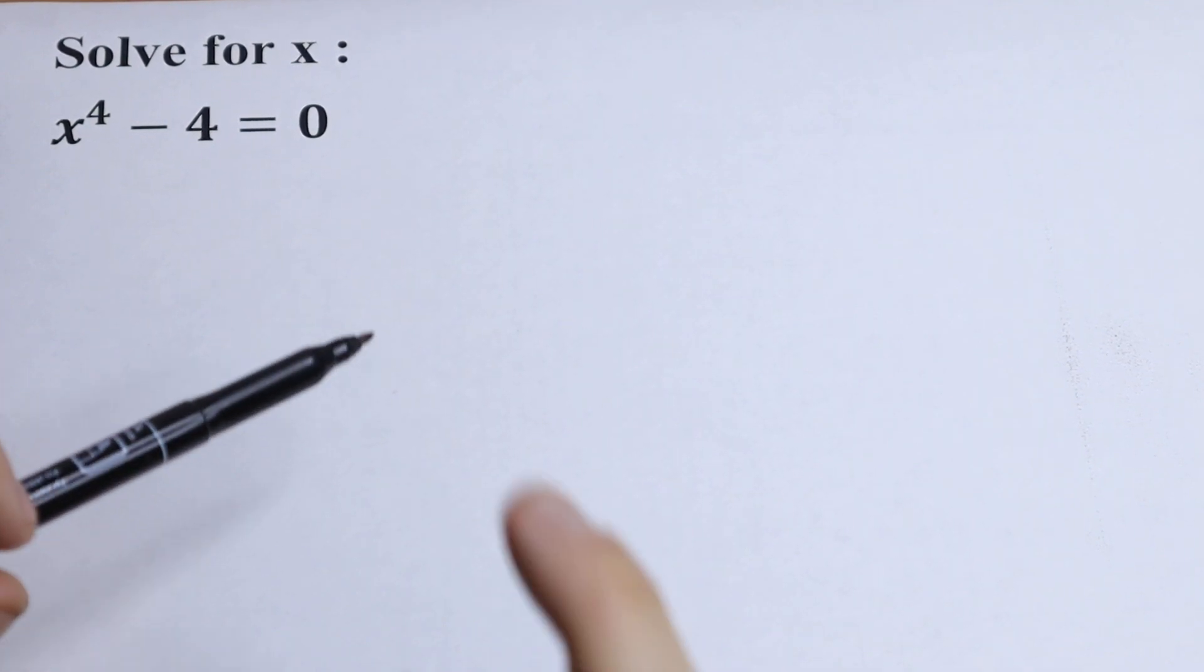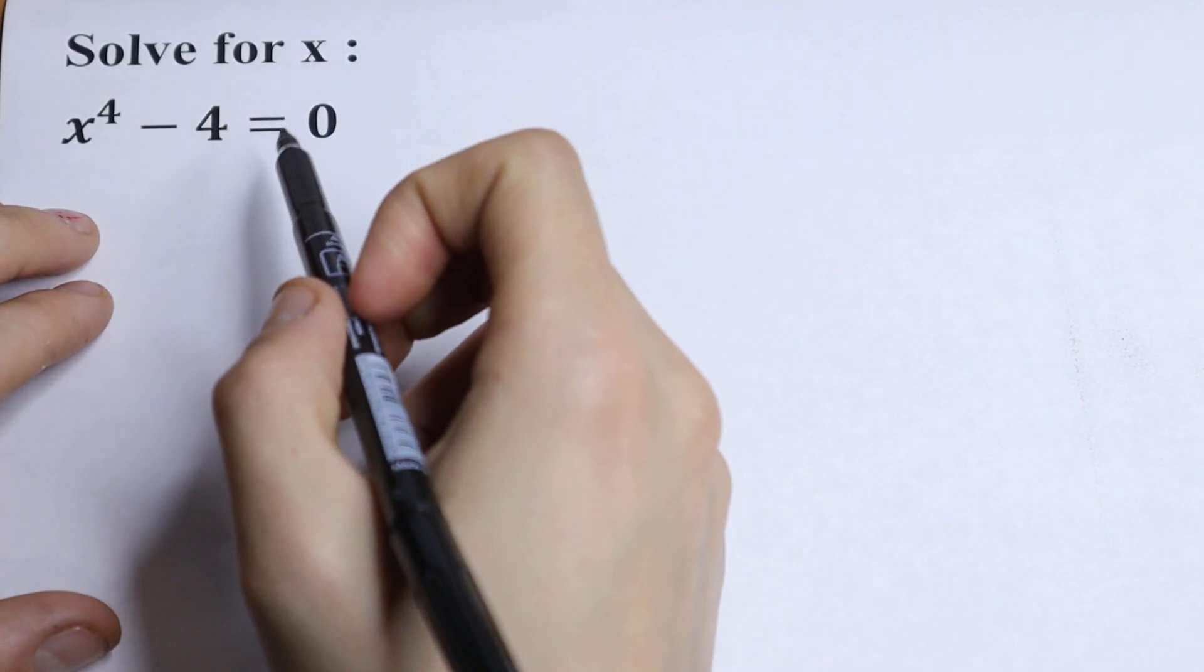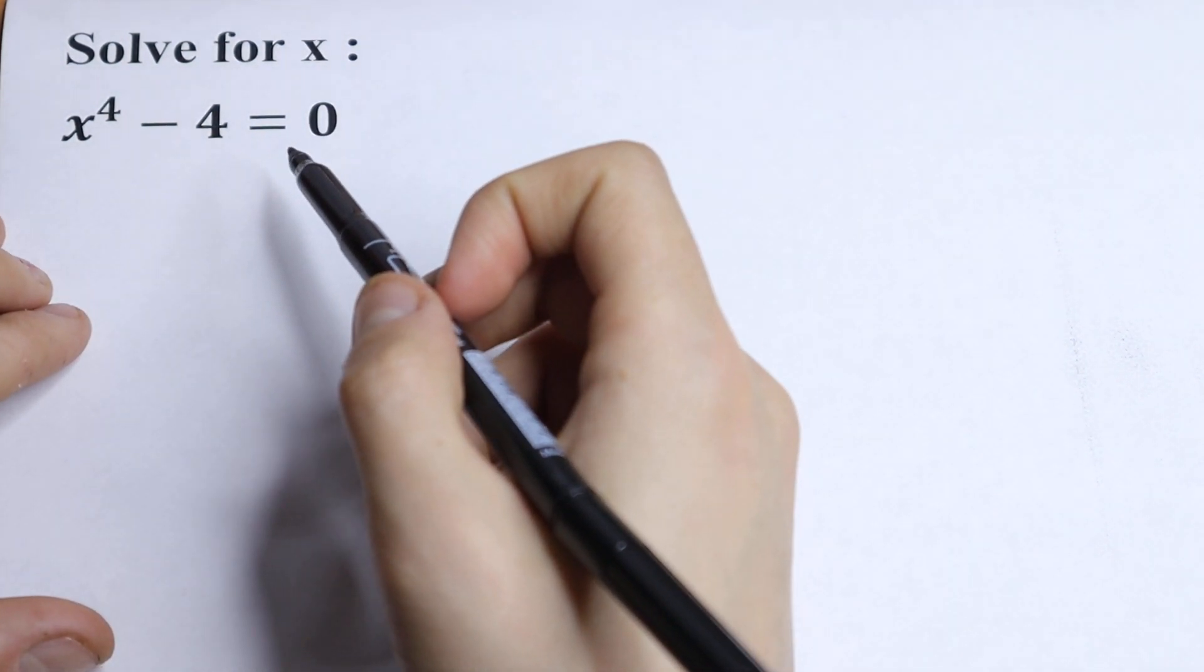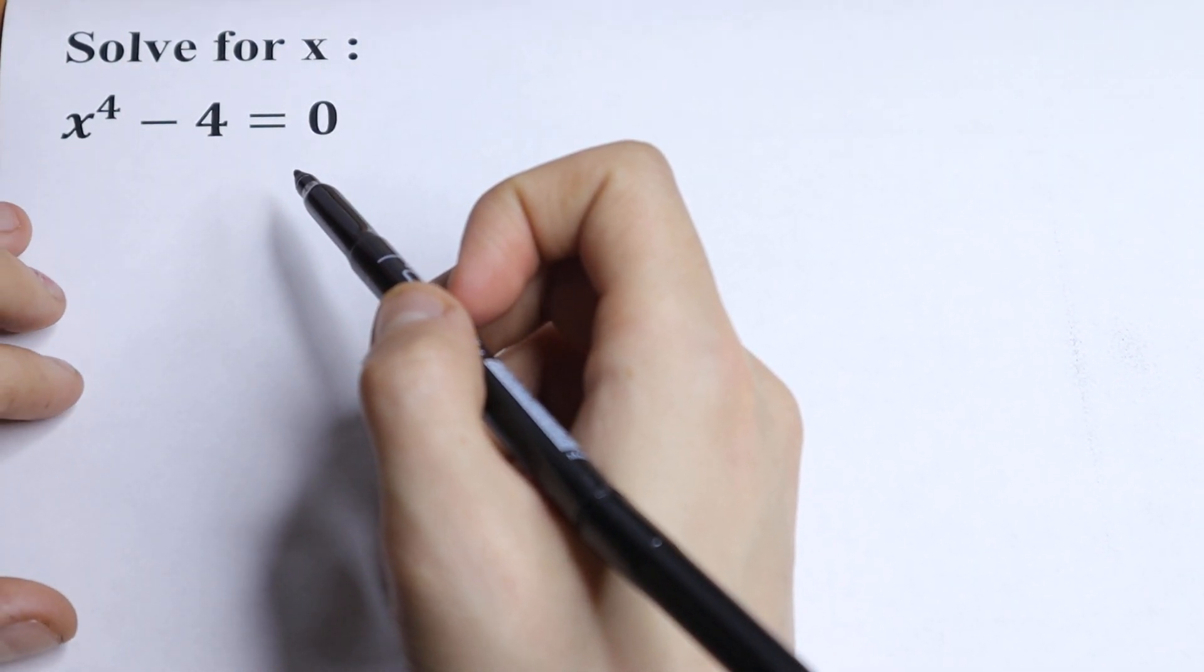Hello everyone, welcome back to MathMode. Here we have an interesting equation x to the fourth power minus 4 equal to 0. And let's find all roots.